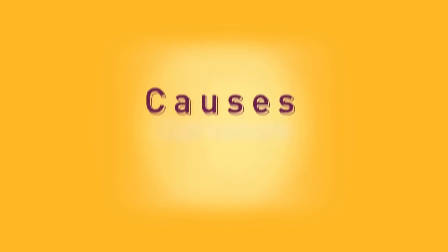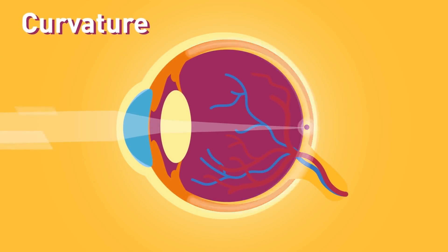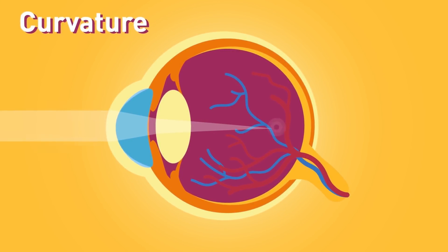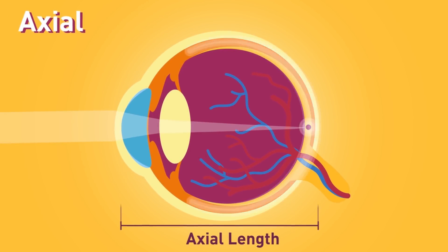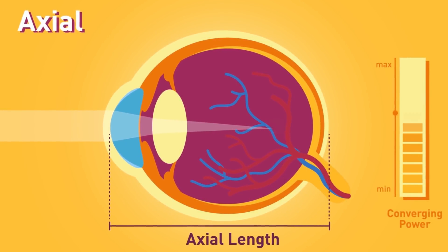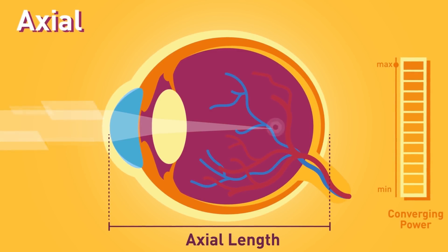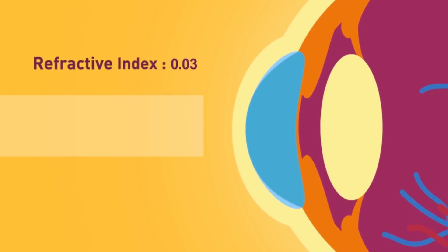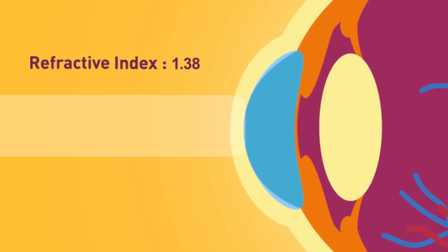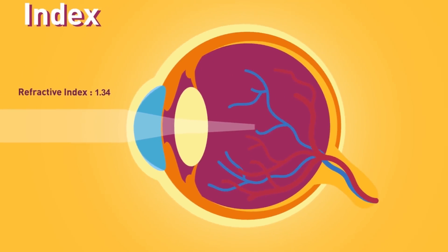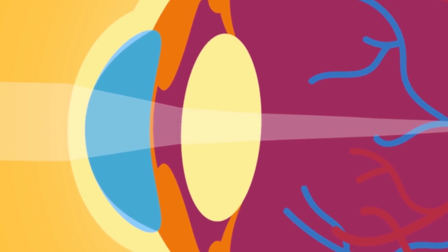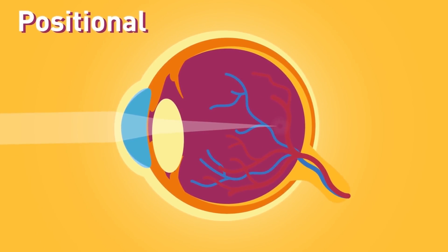Causes. Curvature: increase of curvature of the cornea or lens causes light rays to be focused in front of the retina, causing myopia. Axial: increase in axial length of the eye increases converging power, causing light rays to be focused in front of the retina. Index: increase in refractive index — light bending or focusing power — of the lens, for example in cataract. Positional: anterior displacement of the lens, e.g., after trauma, again causes light rays to be focused in front of the retina.